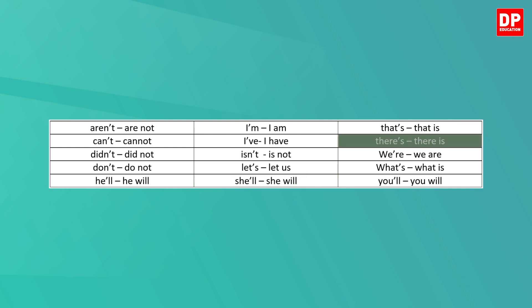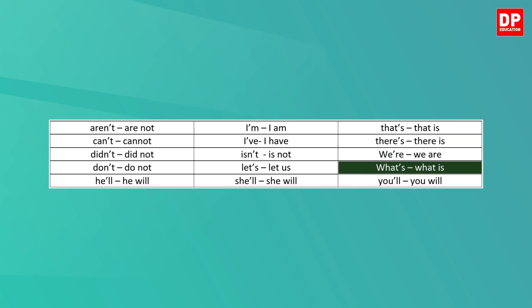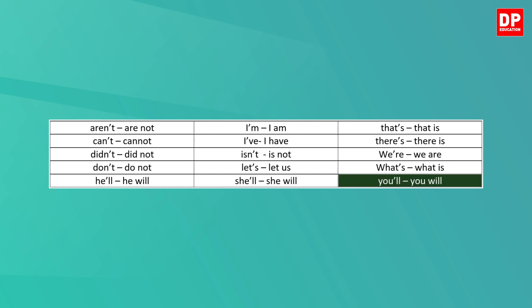There's — there is. We're — we are. What's — what is. You'll — you will. You would have noticed that instead of a few letters, and sometimes instead of a few words, we use the apostrophe.